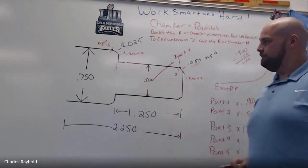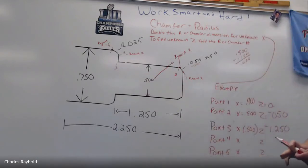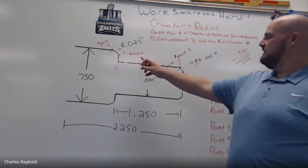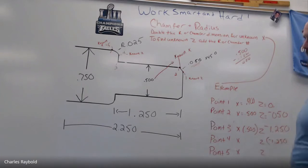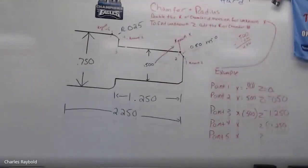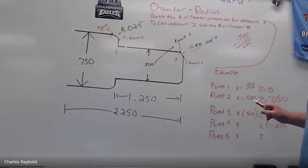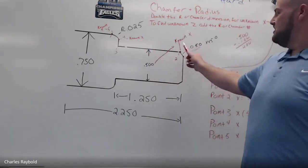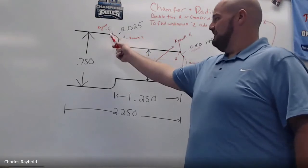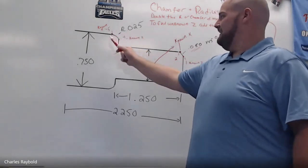That gets me here, and that's going to be my known Z for my radius. My Z is going to be minus one point two five zero. Now I've got to figure out my start point for my radius. To find my start point, I'm going to look to see what I know. Just like over here I knew where my chamfer ended, I know where my radius ends. My radius ends up here.